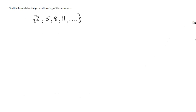In the next example, we want to find the formula for the general term a sub n of the sequence. Our sequence is 2, 5, 8, 11, and so on. We're going to work backwards from the way we did it in the first example. We notice that we go from 2 to 5, which is an increase by 3; from 5 to 8, another increase by 3; and 8 to 11. So we're going up in values of 3.